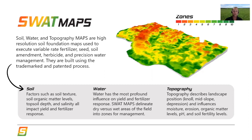Water is the biggest influence on yield. Areas can lose yield due to too much or too little water, and sometimes that can happen even all in the same field in the same year. But it's important to delineate which areas are relatively wet and relatively dry for the purpose of understanding both yield potential and nutrient movement across the landscape.